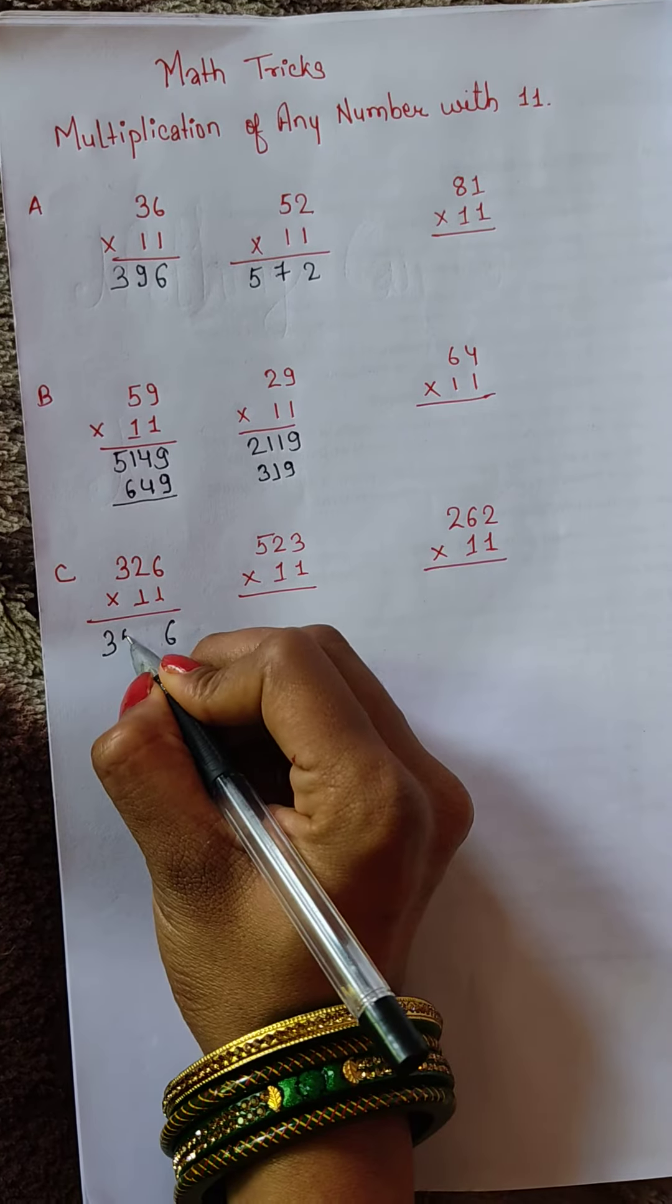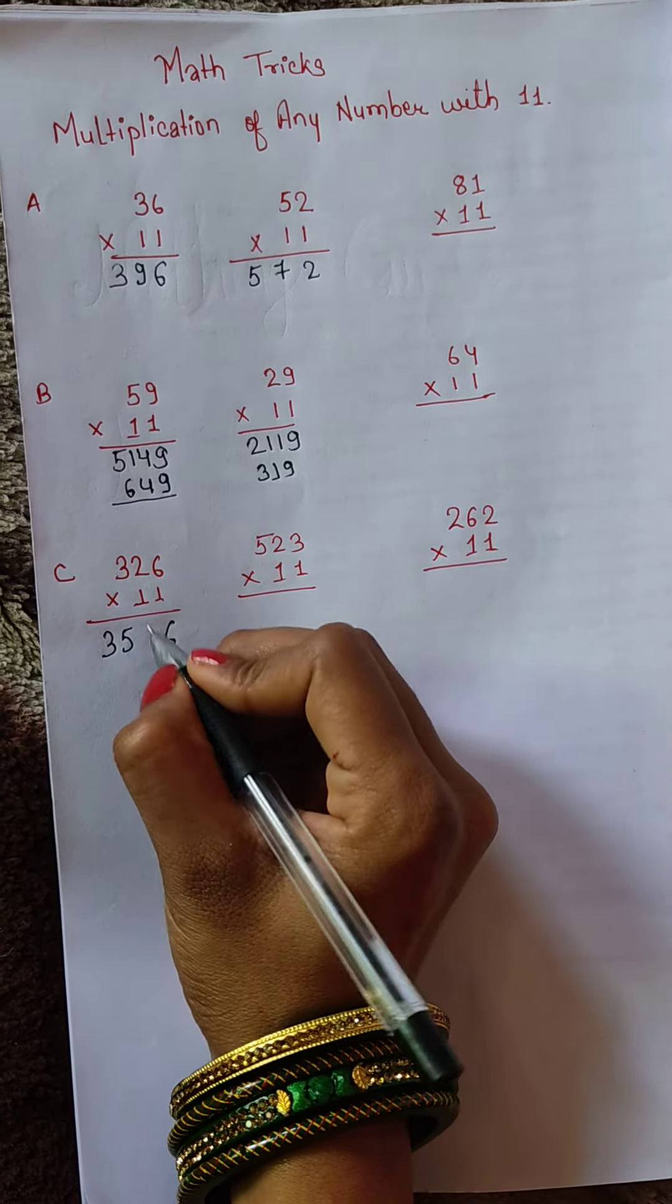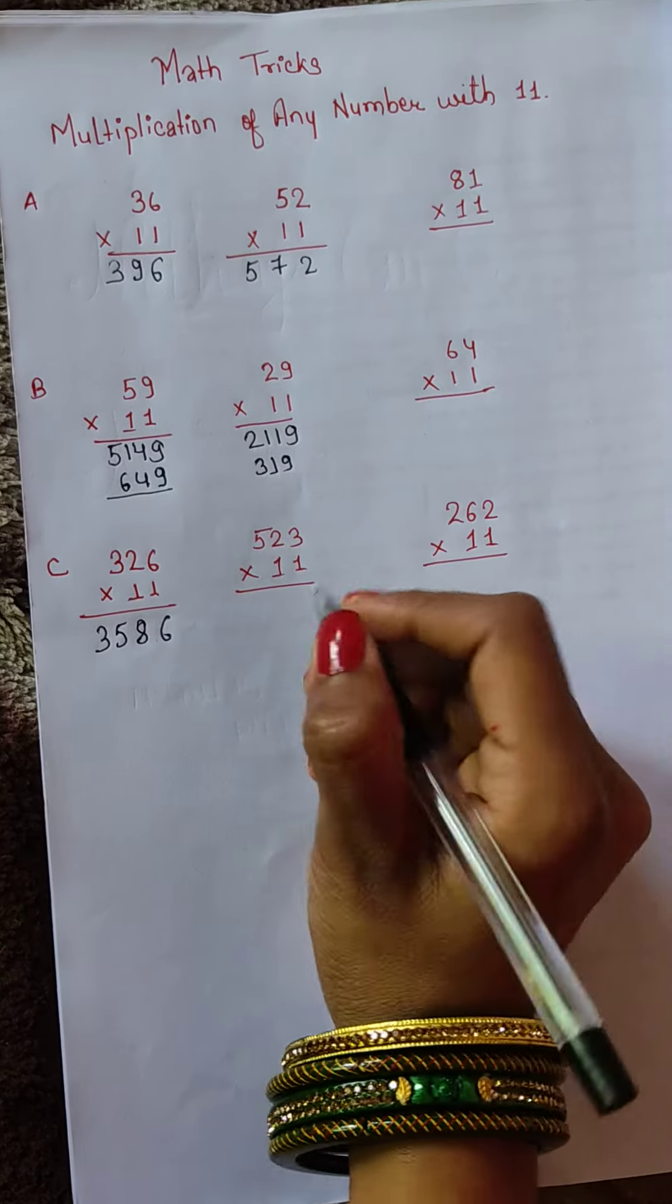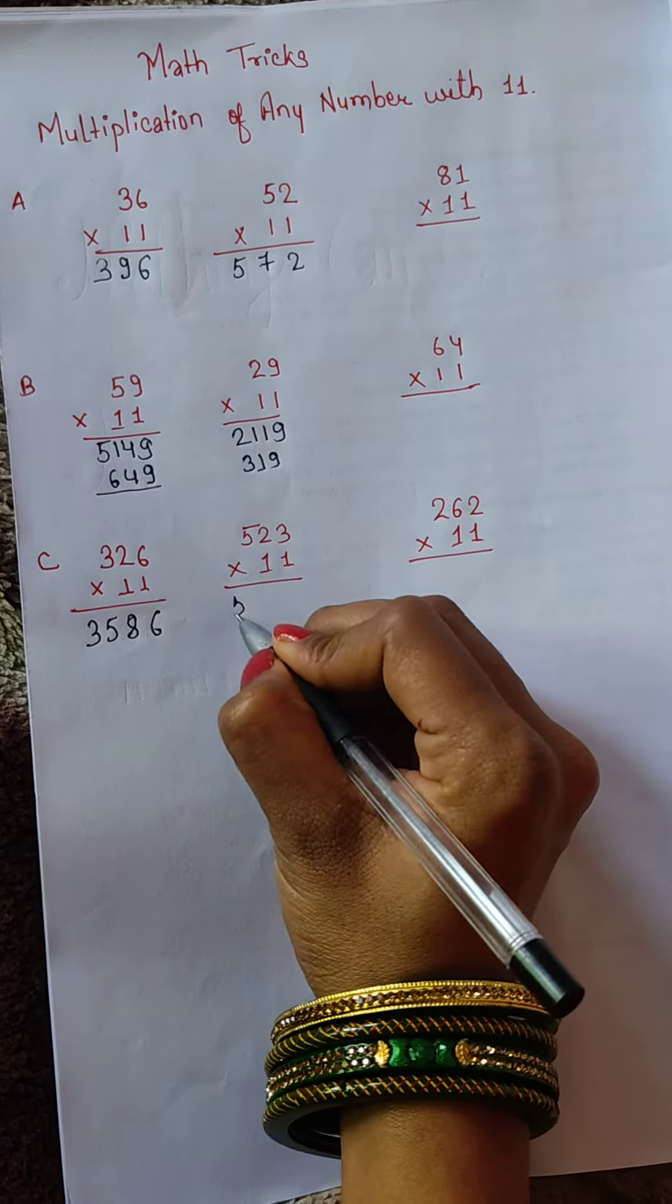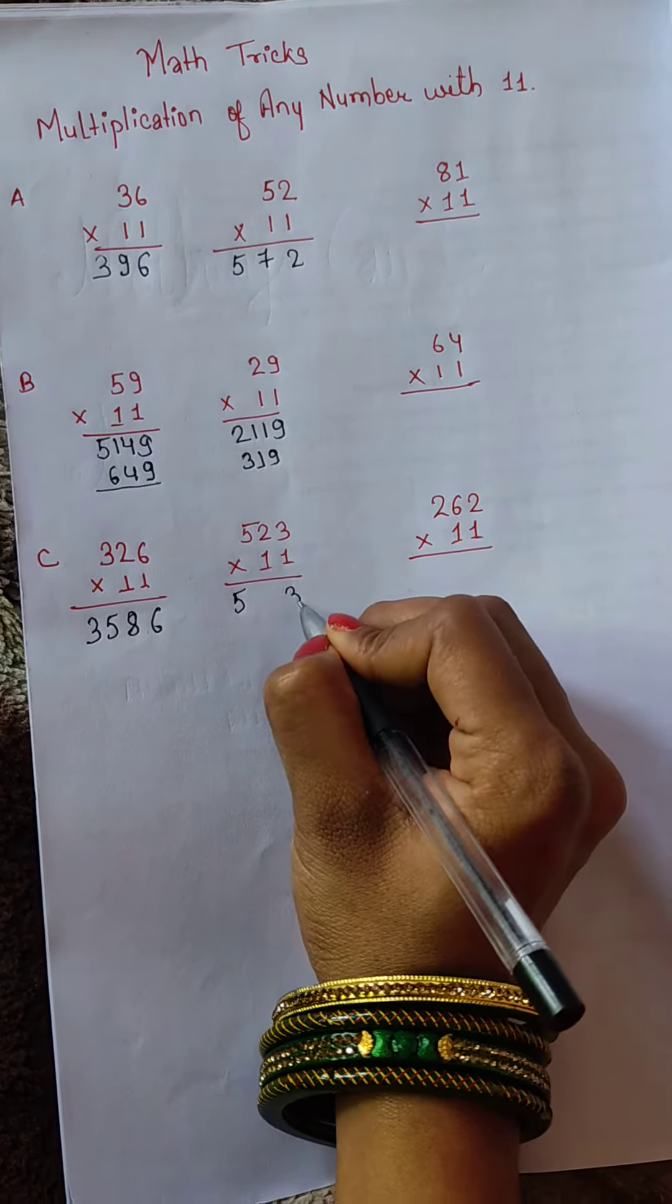3 plus 2 equals 5 and 6 plus 2 equals 8. This will be the final answer: 3586.